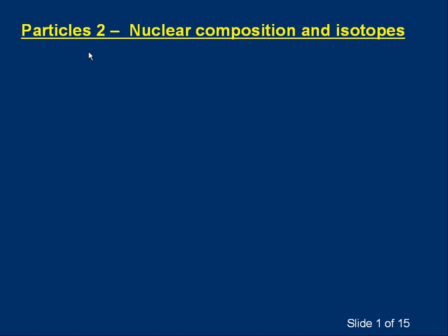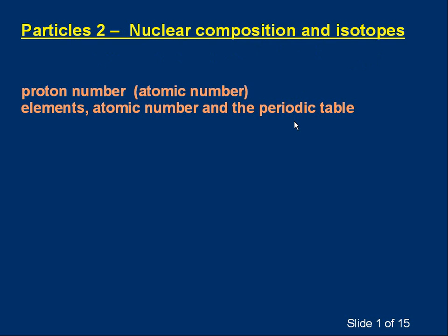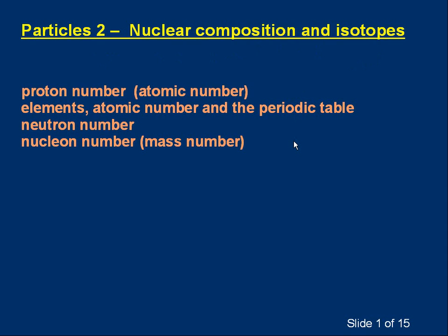Hello, welcome to the second in this series of lessons on particles. We're going to talk about the composition of the nucleus and about the term isotopes. We'll cover what we mean by proton number, sometimes called atomic number. We'll mention elements and how atomic number and the periodic table are related. We'll talk about neutron number, nucleon number — sometimes called mass number — what isotopes are, and also the term nuclides.